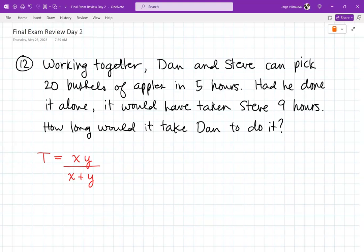Based on what they give me, I plug it in and solve for the missing variable. Dan and Steve can pick up 20 bushels of apples in five hours. So together, it takes them five hours to do a job. Steve takes nine hours, so let's say Steve is x, so that's 9. We don't know what Dan is, that's going to be y. So 5 = 9y/(9+y).